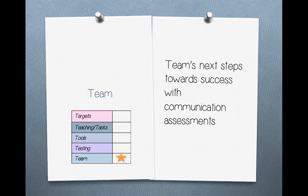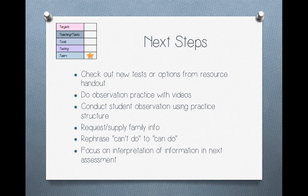These are just some ideas about what to do with the information from testing — so it doesn't just live in a report somewhere. Potential next steps include: checking out new tests or options from the handouts, doing practice observations using videos, conducting actual student observations using the same structure, requesting or supplying information from the family about communicative functions, practicing rephrasing 'can't do' to 'can do' in written assessments, and really emphasizing interpretation rather than just reporting what you observed.